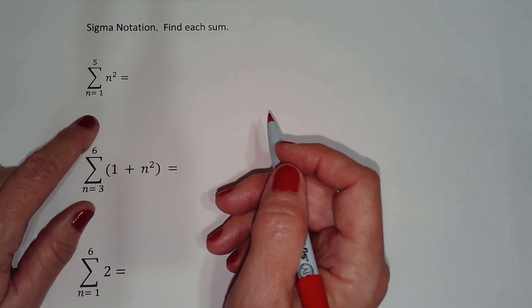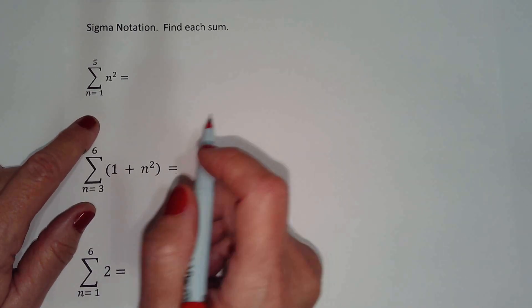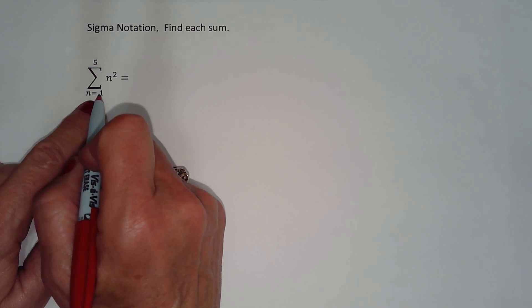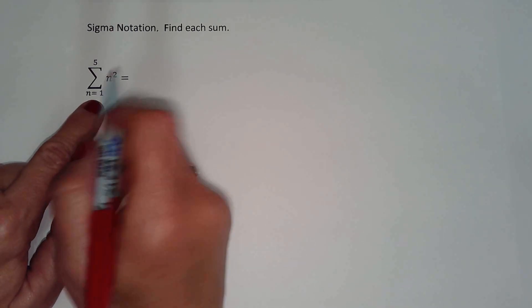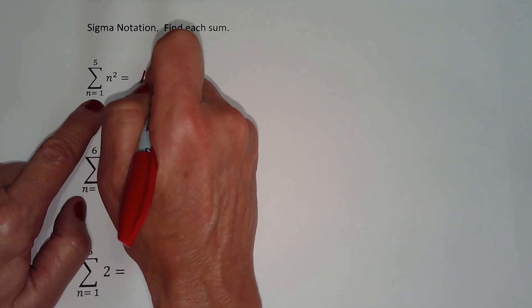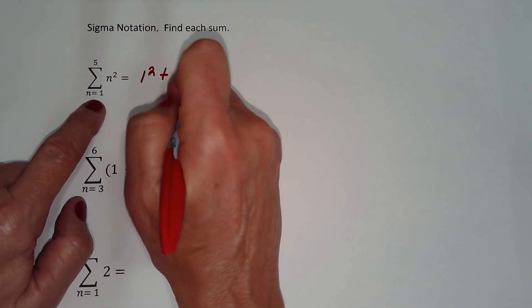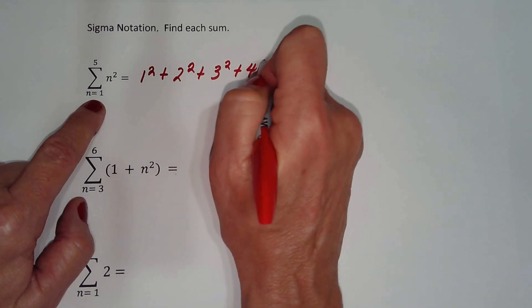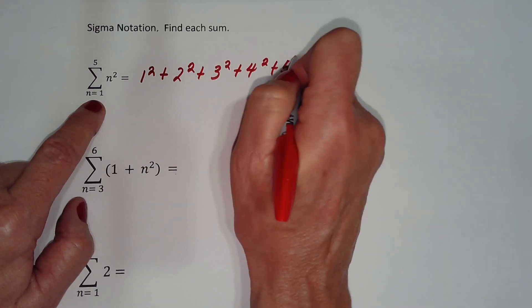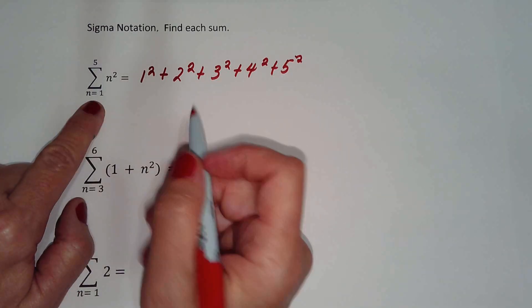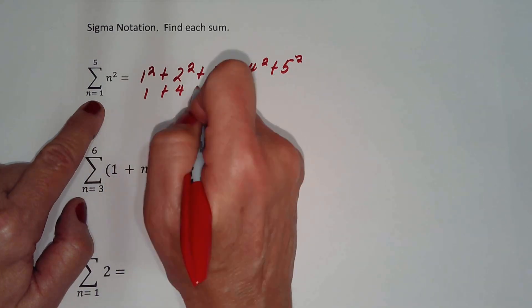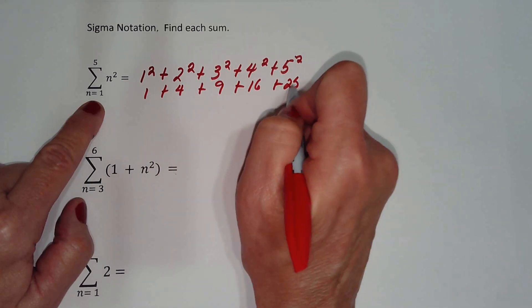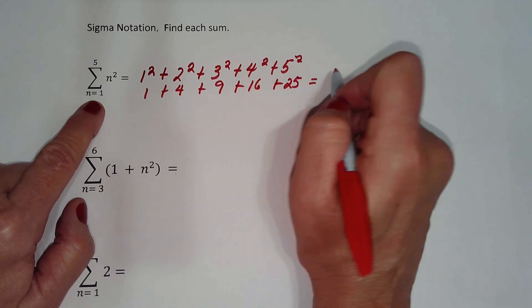Now we're going to find the sum of each arithmetic series given the sigma notation. We start at 1 and go to 5. We take each value and substitute it into n: 1 squared plus 2 squared plus 3 squared plus 4 squared plus 5 squared, which equals 1 plus 4 plus 9 plus 16 plus 25. Adding these together gives us 55.